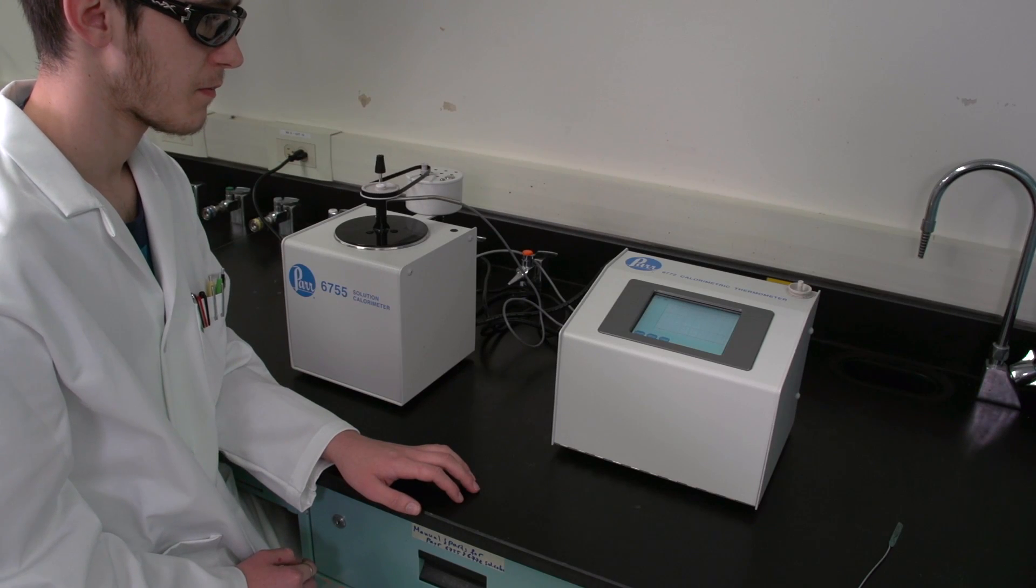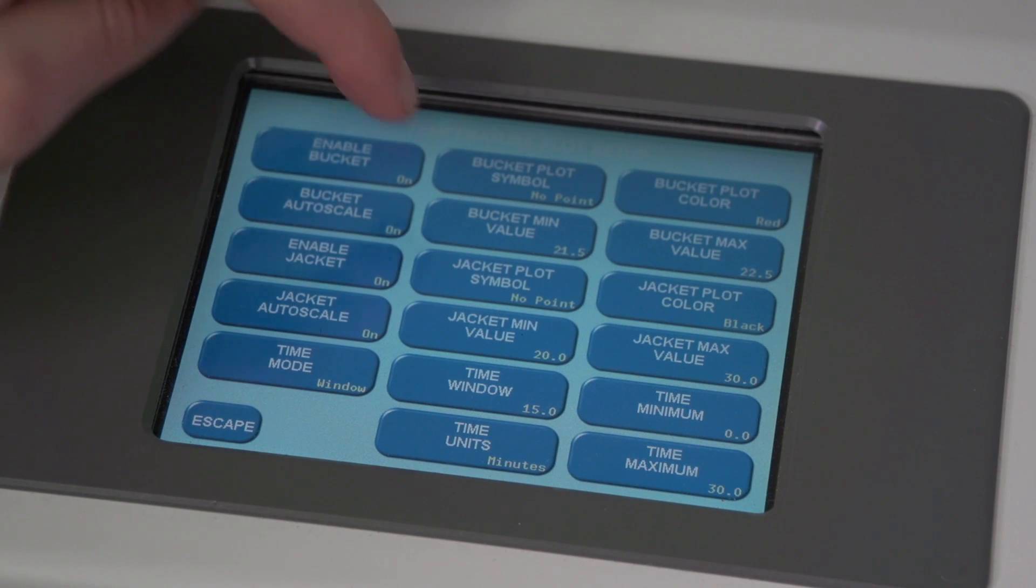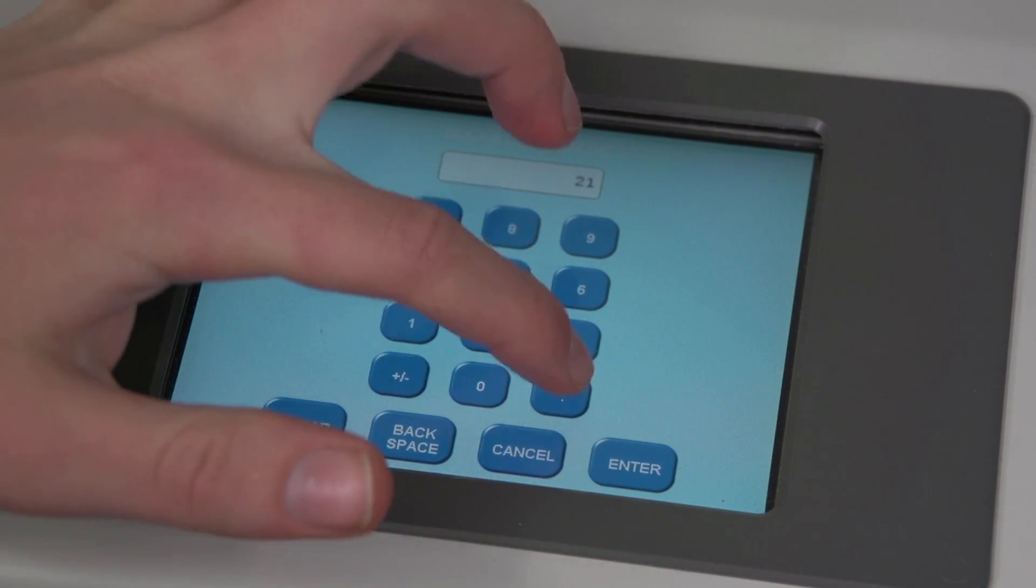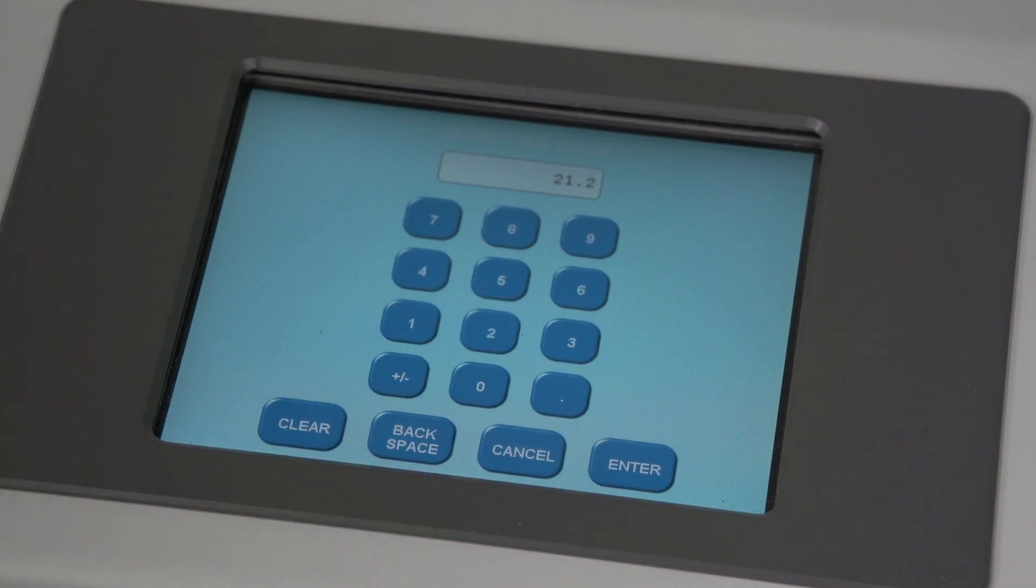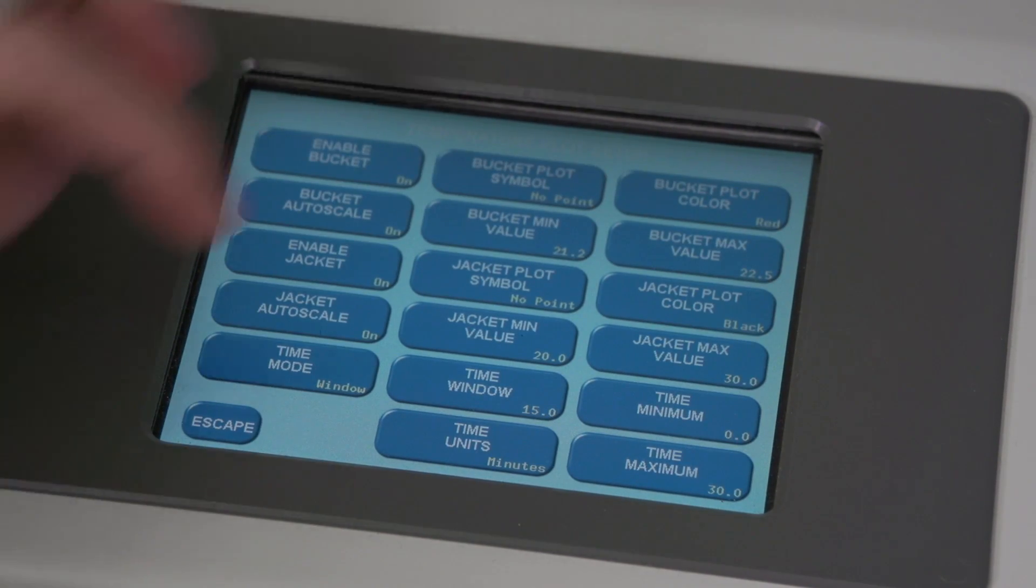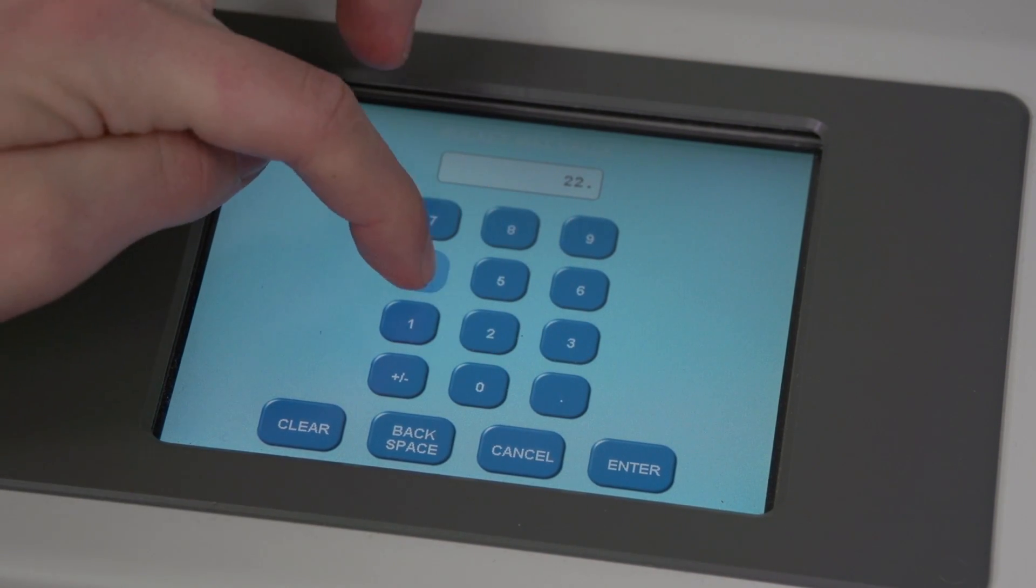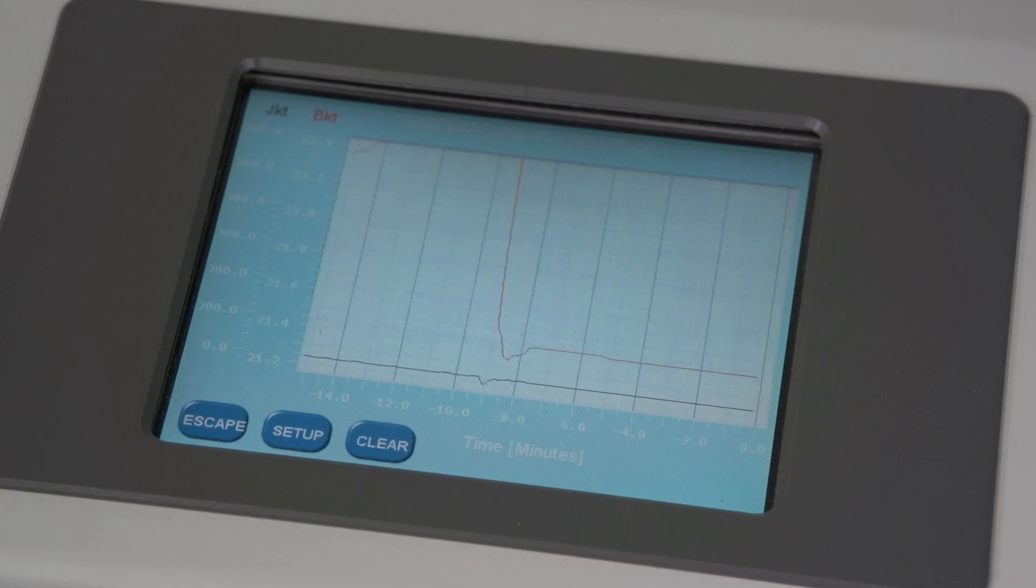For your exothermic TRIS and HCl run, choose bucket min value. Enter a temperature just below the bucket temperature. Choose bucket max value. Set at one degree above the minimum temperature selected. Press escape to return to the calorimeter operation screen.